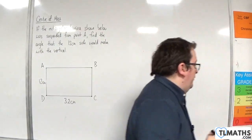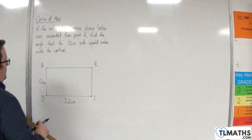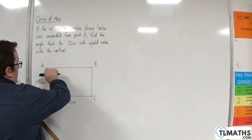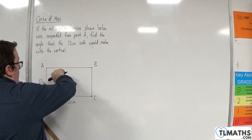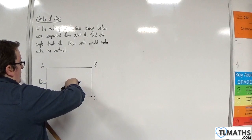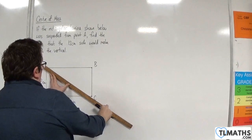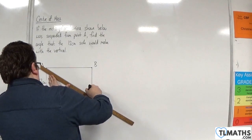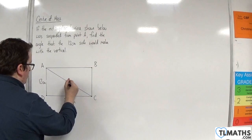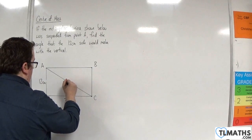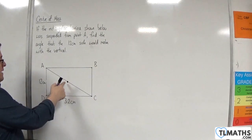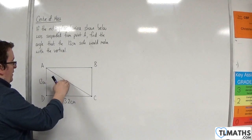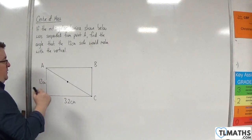So, when I suspend it from point A, what's going to happen is that vertically we'll have, from point A, going through the centre of mass. The centre of mass is dead centre of your rectangle, of course. So it'll be this point here — that point is 16 centimetres along and 6 centimetres up.